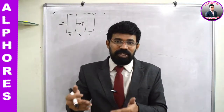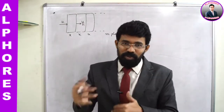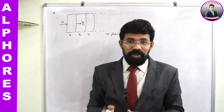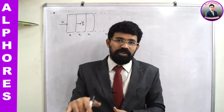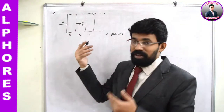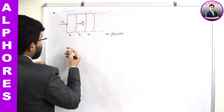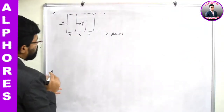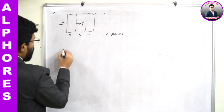Both are different: 'reduced by 1/nth' means the velocity becomes u - u/n, whereas 'reduced to 1/nth' means the velocity becomes u/n. In this new situation, I will use the same kinematic equation v² - u² = 2as again.